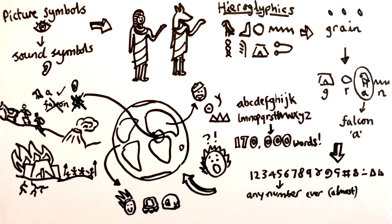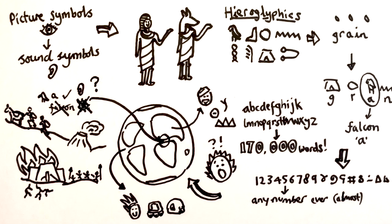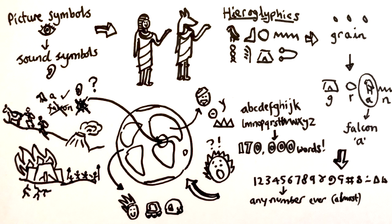But when this writing started to spread further afield, people found there was something missing. Watch part 3 to find out what, and to meet some ancient Greeks, Mayans, and Meros.